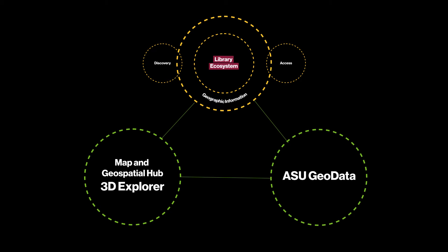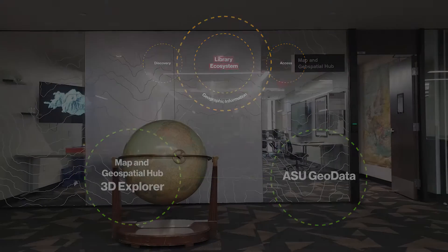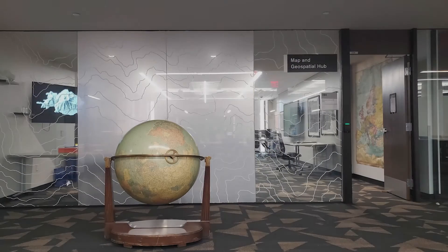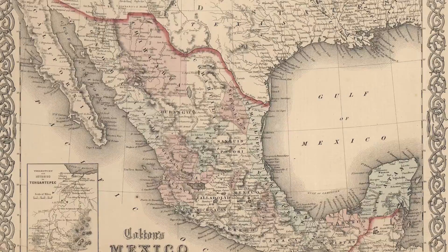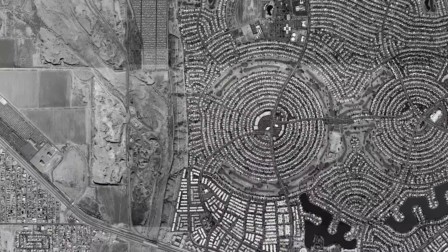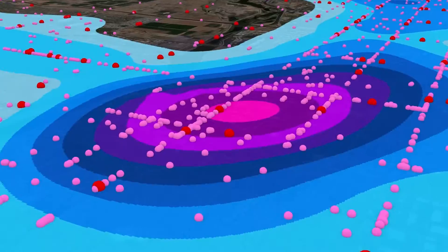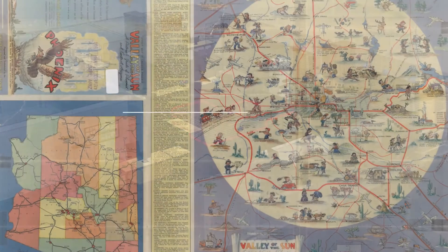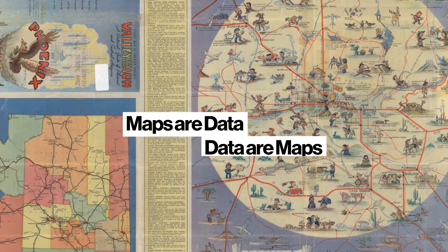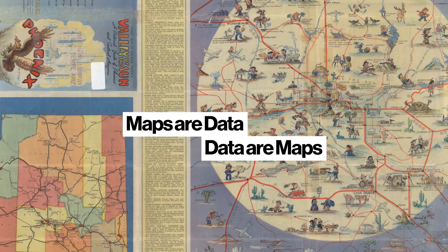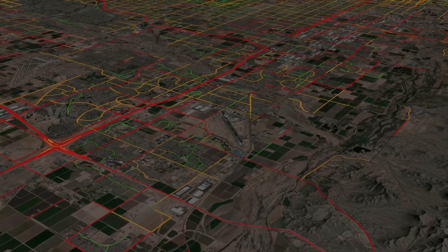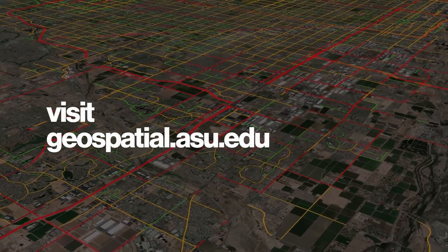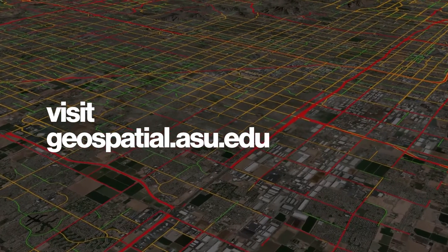That's how we're striving to build an interconnected ecosystem for geospatial discovery and access — one that, just like the Map and Geospatial Hub itself, blends the analog and physical with the digital and virtual. Because for us here at ASU Library, maps are data, and data are maps. Learn more by visiting geospatial.asu.edu. Thank you.